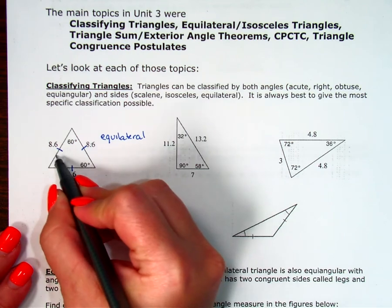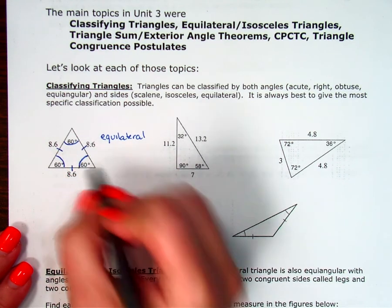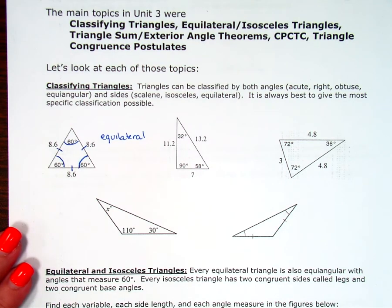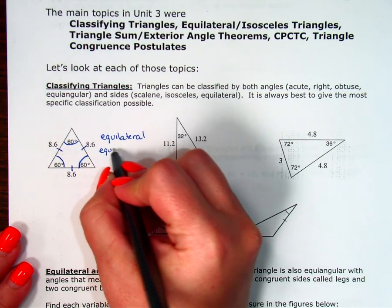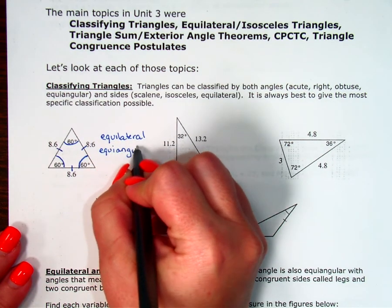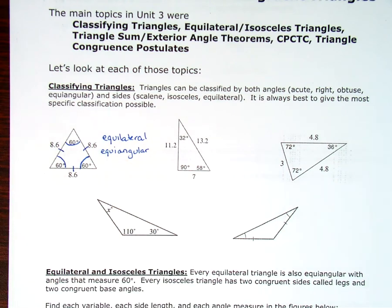When I look at the angles, I have a 60 degree angle, a 60 degree angle, and a 60 degree angle. So while they are all acute and this is an acute triangle, since they're all equal, it's more specific to call it equiangular. So anytime it asks me for the best classification, I should not use acute here. I should use equiangular, even though it is an acute triangle.